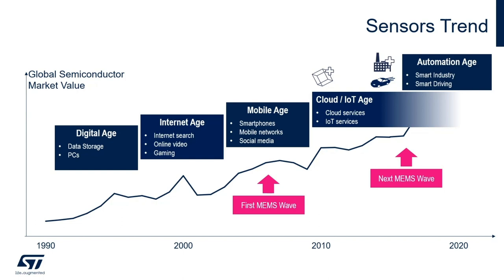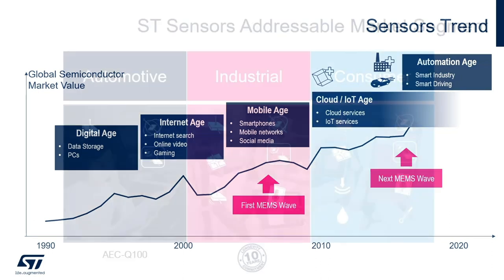Today, more than 10 years later, we are riding the next wave, started with the Internet of Things and its ramification that we see today in smart industry and smart driving applications. From our leading role, we have seen the market, our customers and partners, changing and evolving, and with them their needs. In order to address these needs, both our sensors and the ecosystem around them have evolved.